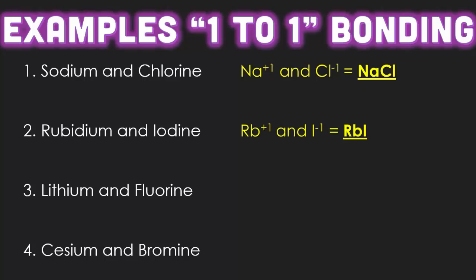Next, we have rubidium and iodine. Rubidium has a plus one charge and iodine has a negative one. Together they make the chemical compound rubidium iodide.